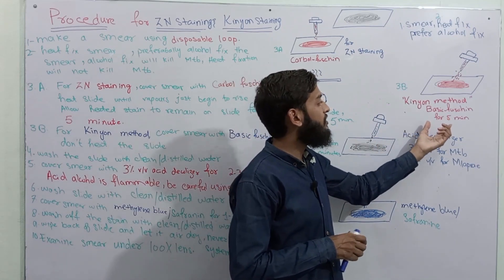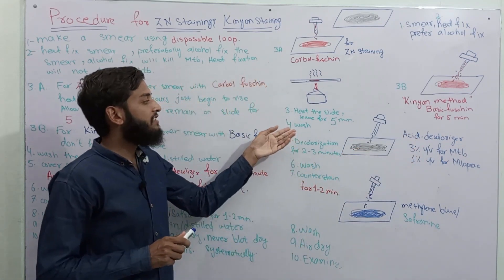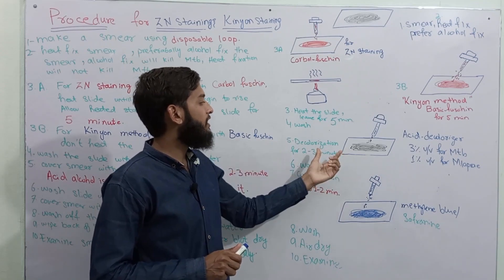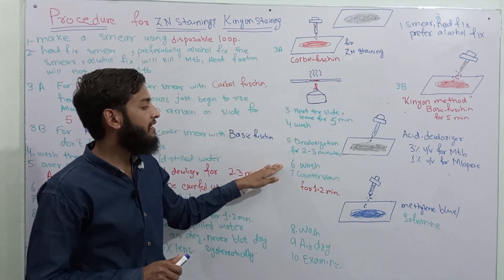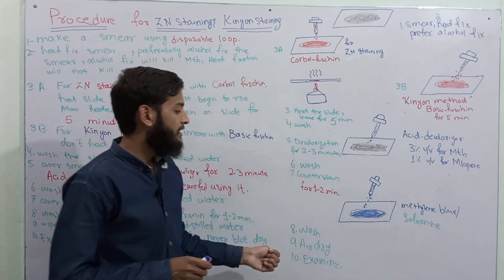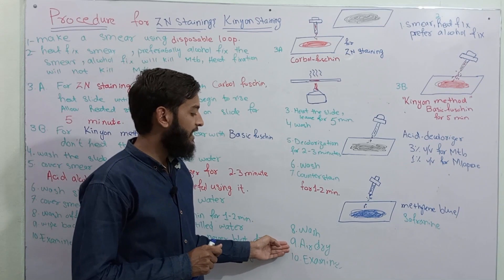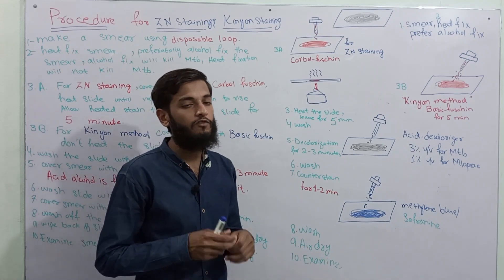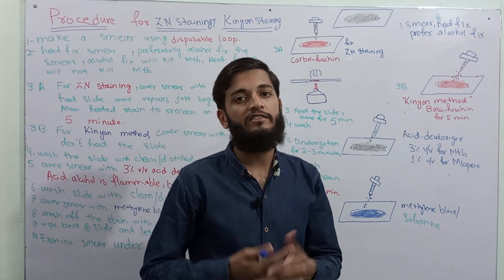If performing the Kinyoun method or cold Zedden method, cover the smear with basic fuchsin for five minutes and leave it. After that, wash the smear with clean or distilled water. Then decolorize the slide with acid alcohol: cover the smear with acid decolorizer for two to three minutes, then wash with clean or distilled water. For counterstaining, cover the smear with either methylene blue or safranin for one to two minutes, then wash with clean or distilled water. Air dry the slide — never use tissue paper or blotting paper for drying, especially when suspecting Mycobacterium tuberculosis. Then examine the slide under the microscope at 100x magnification.